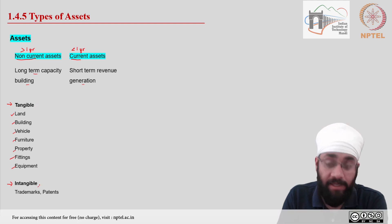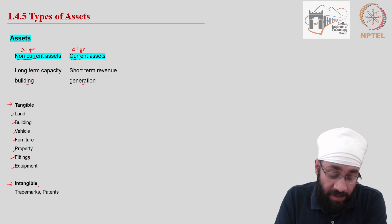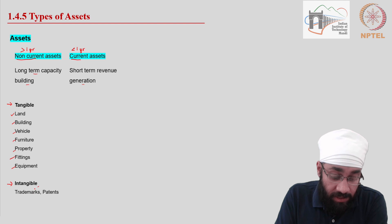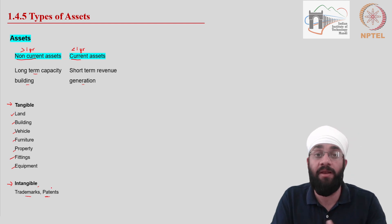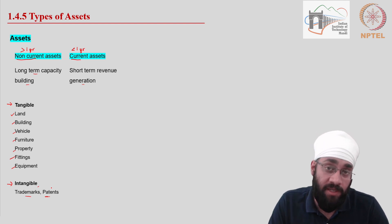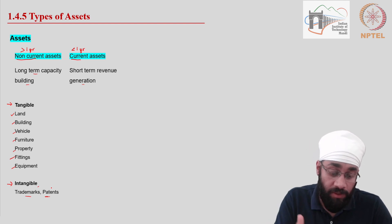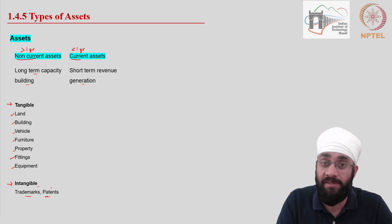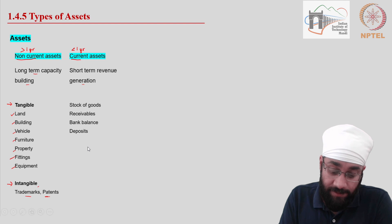Tangible assets are fairly clear — all these things you can see, touch, and feel; they have a physical existence. On the other hand, intangible non-current assets may not have a physical existence. These are trademarks, patents, and intellectual property which give you certain rights or advantages in the market, using which you will be able to generate revenue in the long run. You can't see them, but they are assets — they help you build and generate revenue in the long run.